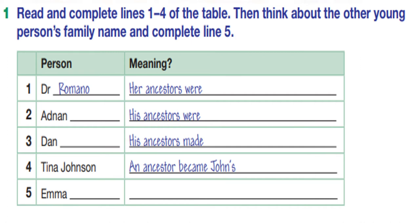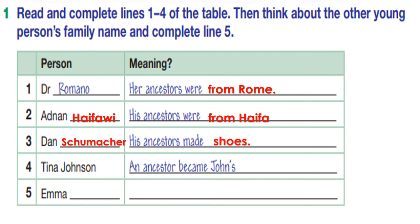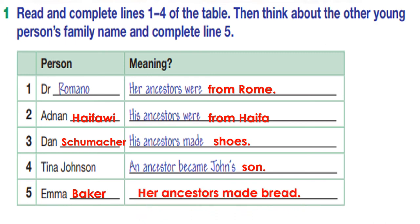Exercise number one: read and complete lines one to four of the table, then think about the other young person's family name and complete line five. You are going to write the names of the persons from the conversation and their meanings. Number one: Dr. Romano — her ancestors were from Rome. Number two: Adnan Hayfawi — his ancestors were from Haifa. Number three: Dan Schumacher — his ancestors made shoes. Number four: Tina Johnson — her ancestor became John's son. Number five: her ancestors made bread.